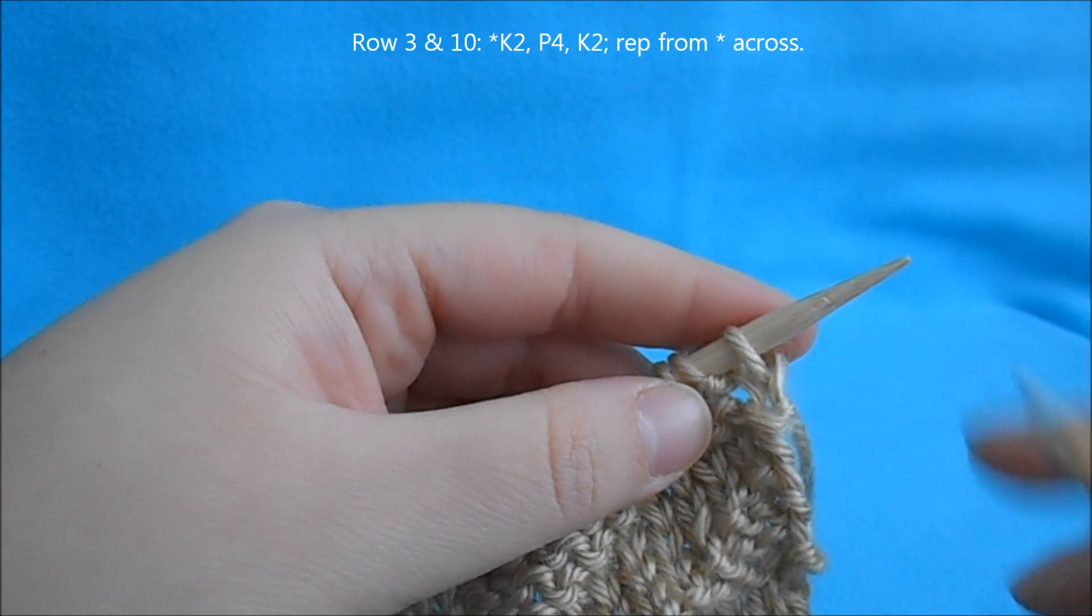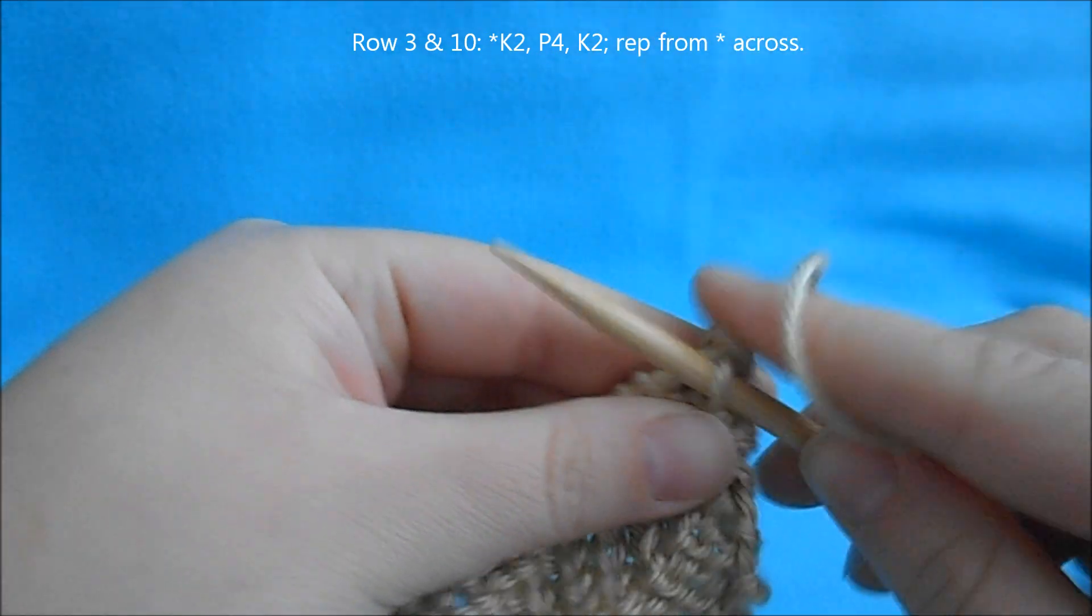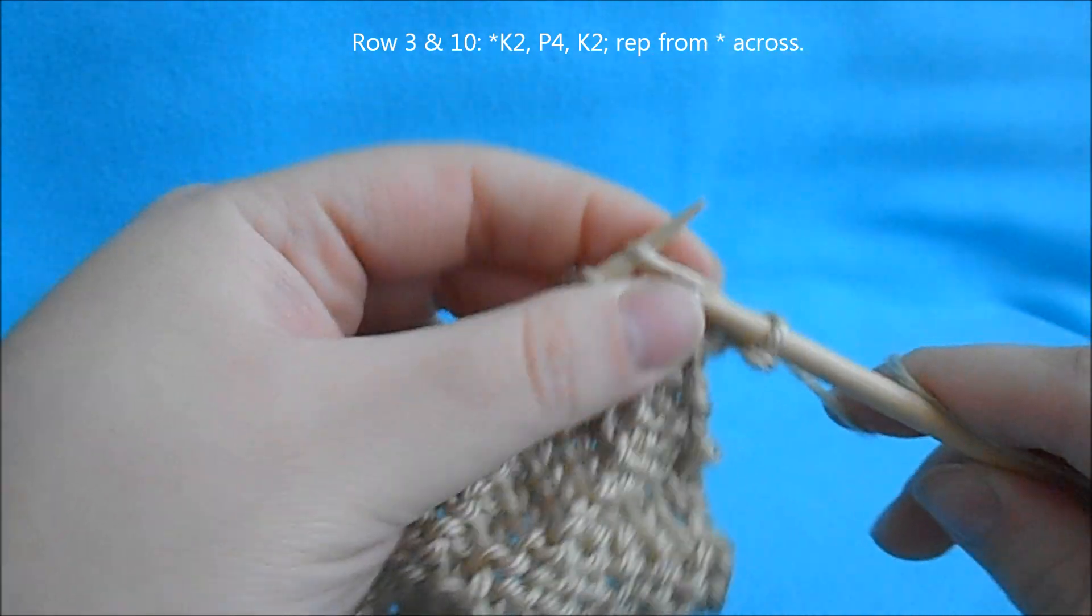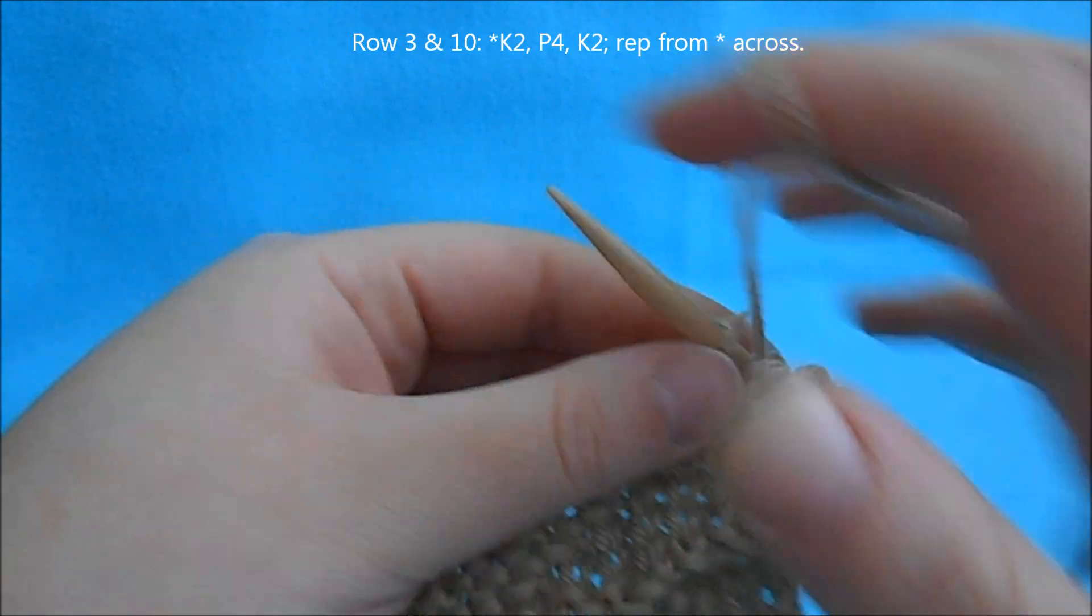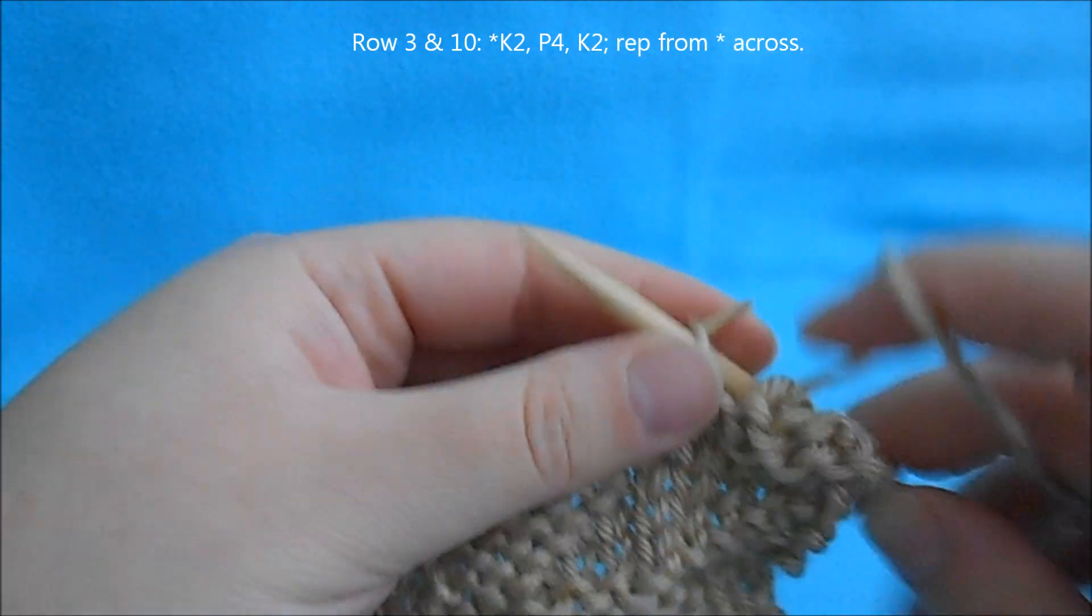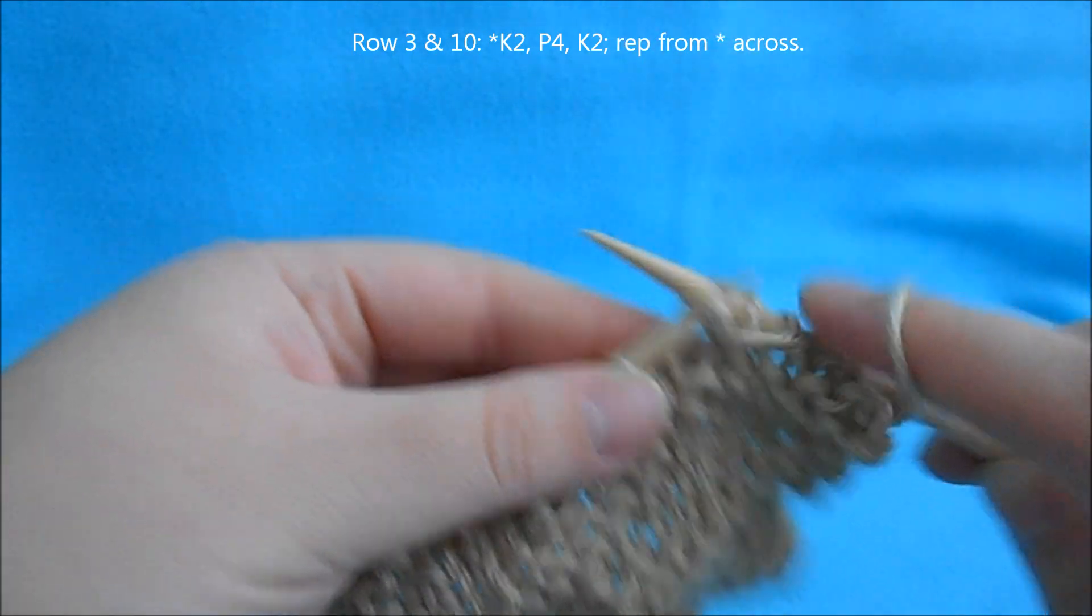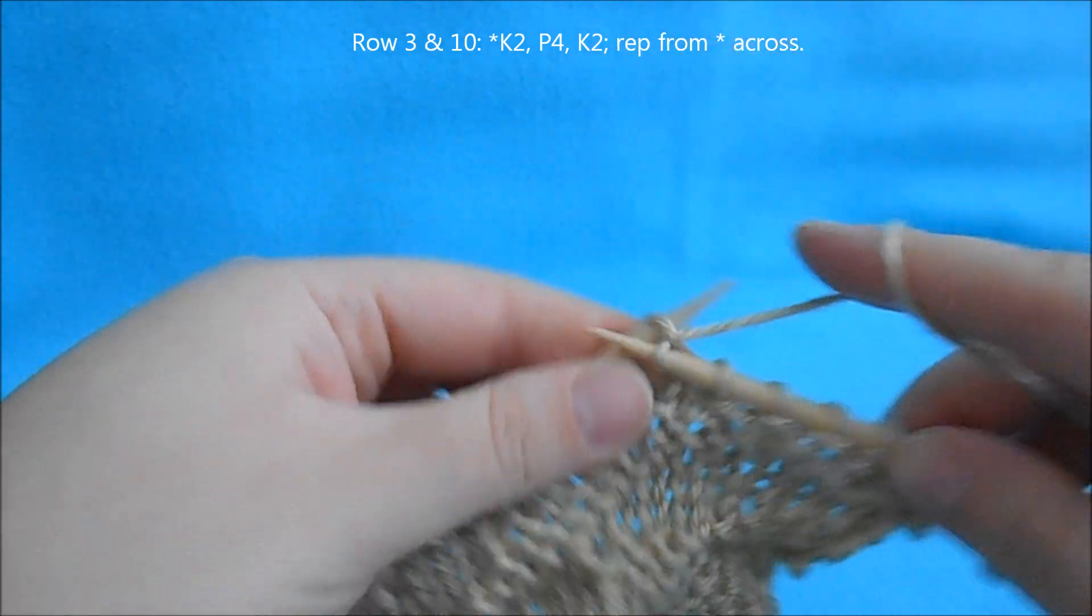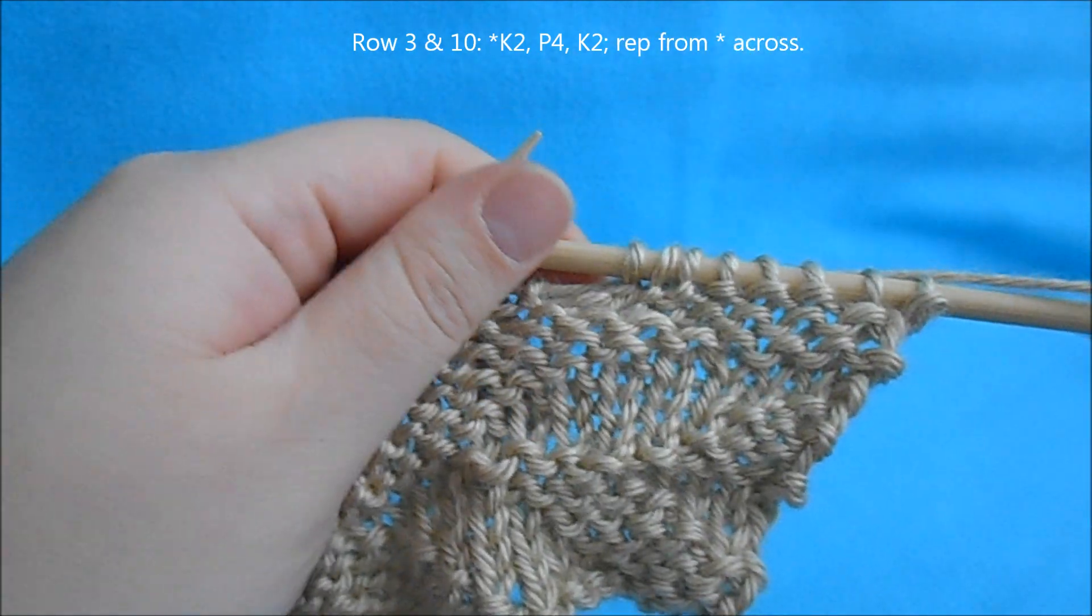For rows 3 and 10, we're going to begin a repeat of knit 2, purl 4, knit 2, and repeat that across.